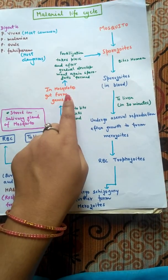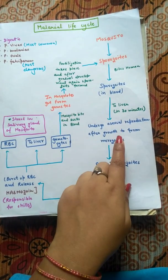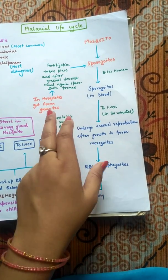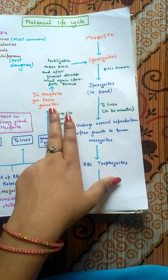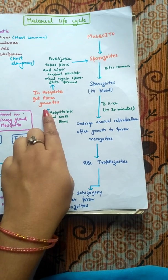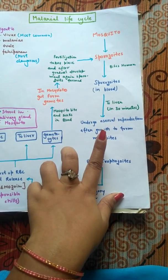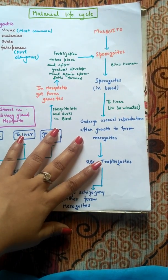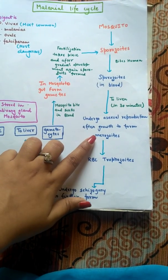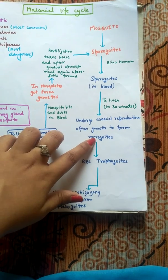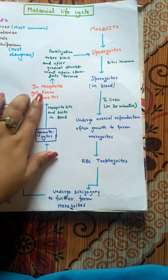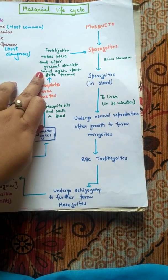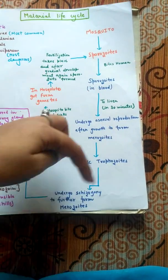To summarize: in the mosquito, sexual reproduction occurs, while in the human host, asexual reproduction occurs. Asexual reproduction takes place in the liver of the human host, and sexual reproduction takes place in the gut of the mosquito. After asexual reproduction, merozoites are formed; after sexual reproduction in the mosquito, gametes are formed, which undergo fertilization to produce sporozoites and restart the cycle.